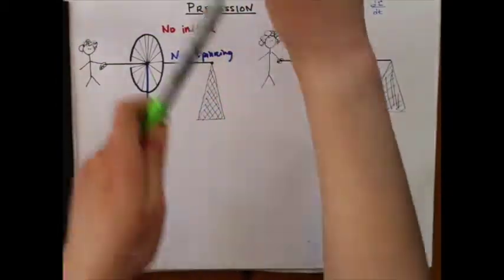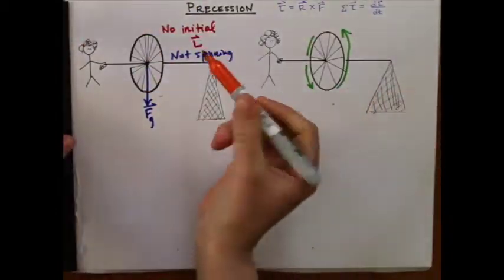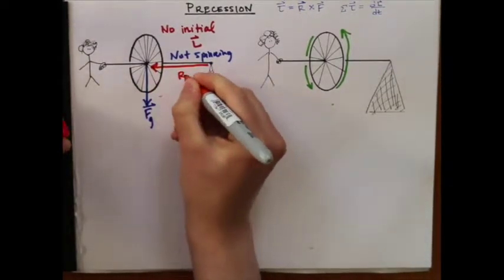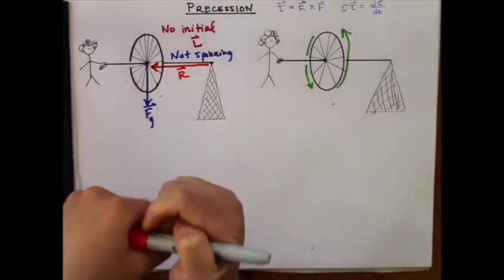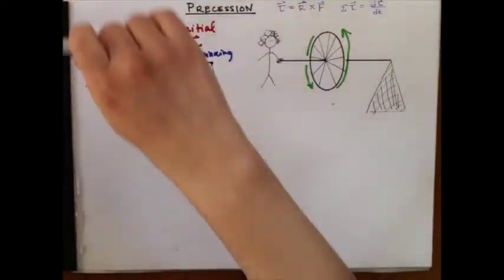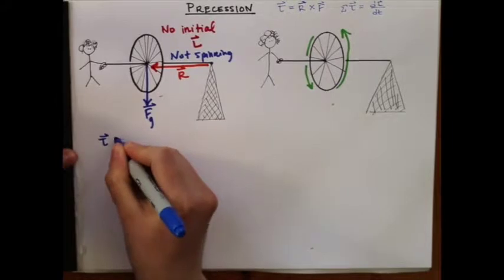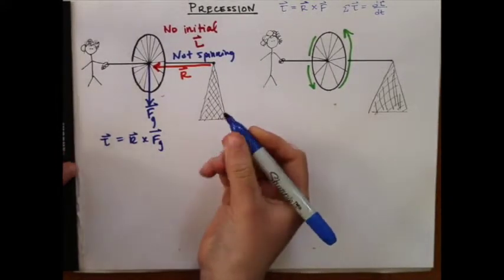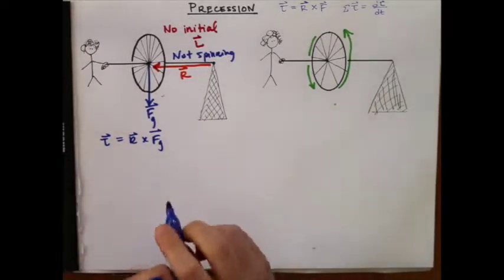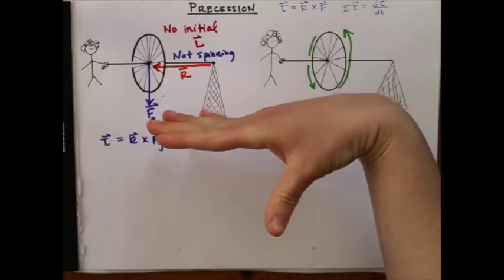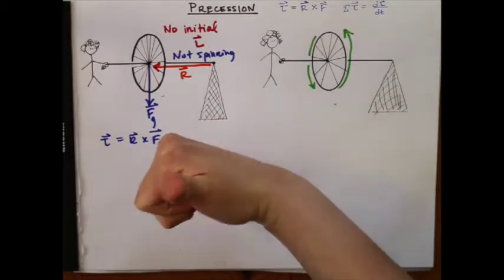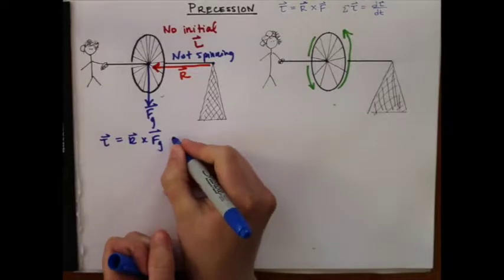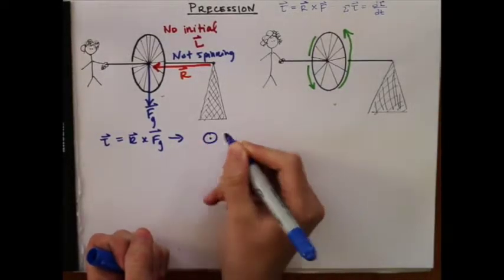So what direction is the torque in? Well, the R would be from the pivot point to the point where the force is applied. So if we do torque due to gravity is R cross F_G, what direction is that? Point your fingers in the direction of R, curl them in the direction of F, the torque is out of the page.